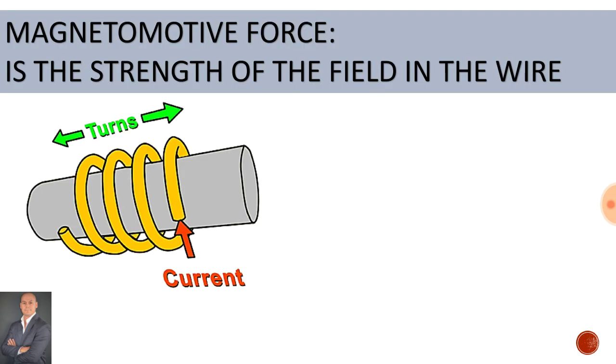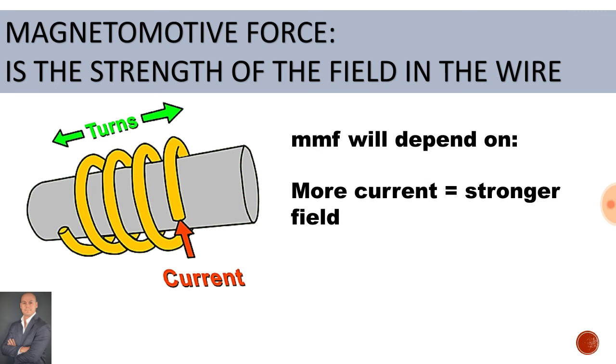Now the magnetomotive force is the strength of the field in the wire, and that is represented by the letter F. Now MMF will depend on the amount of current flowing through the coils and the number of coils.